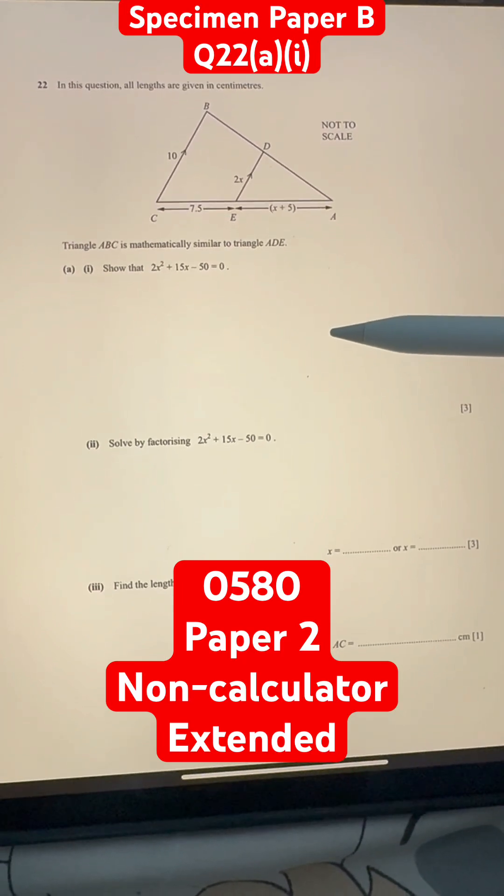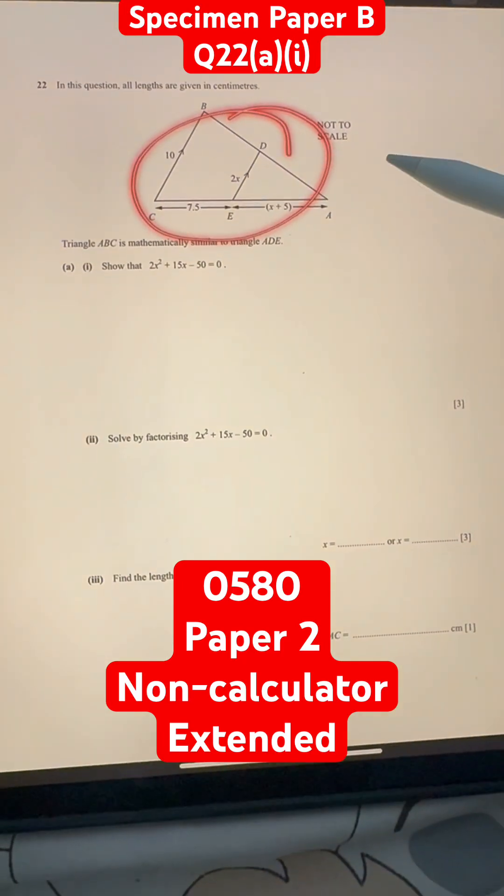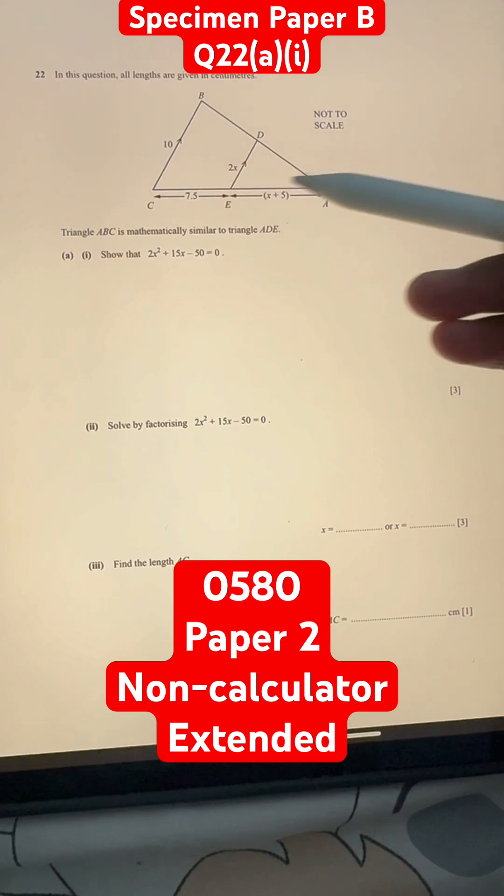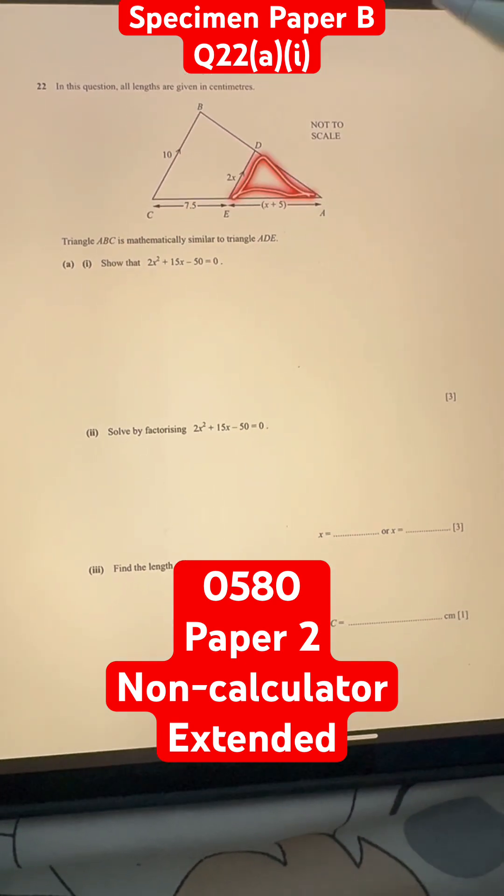Question 22. In this question, all lengths over here are given in centimeters. Triangle ABC is mathematically similar to triangle ADE, which is smaller.